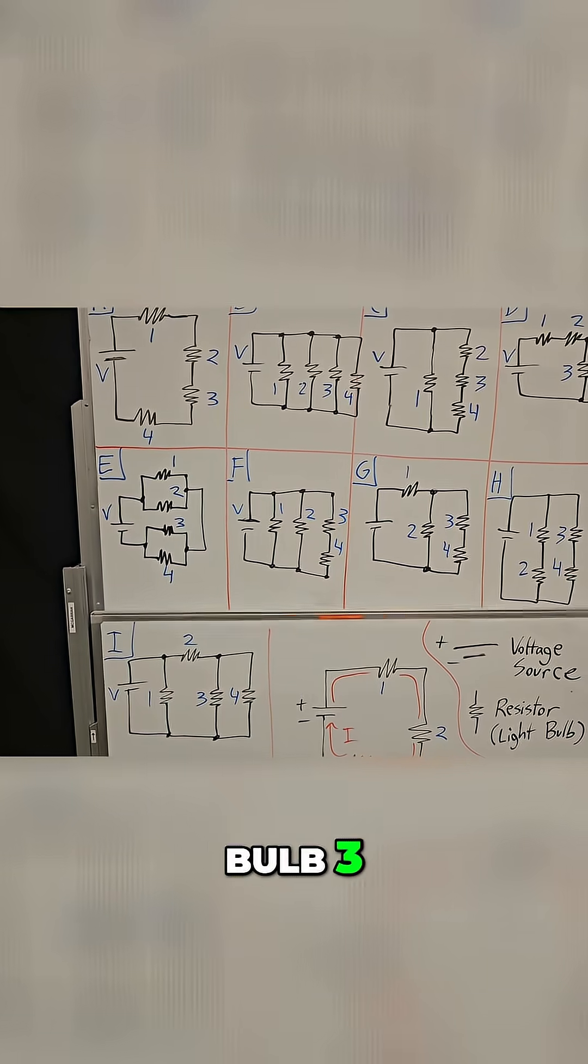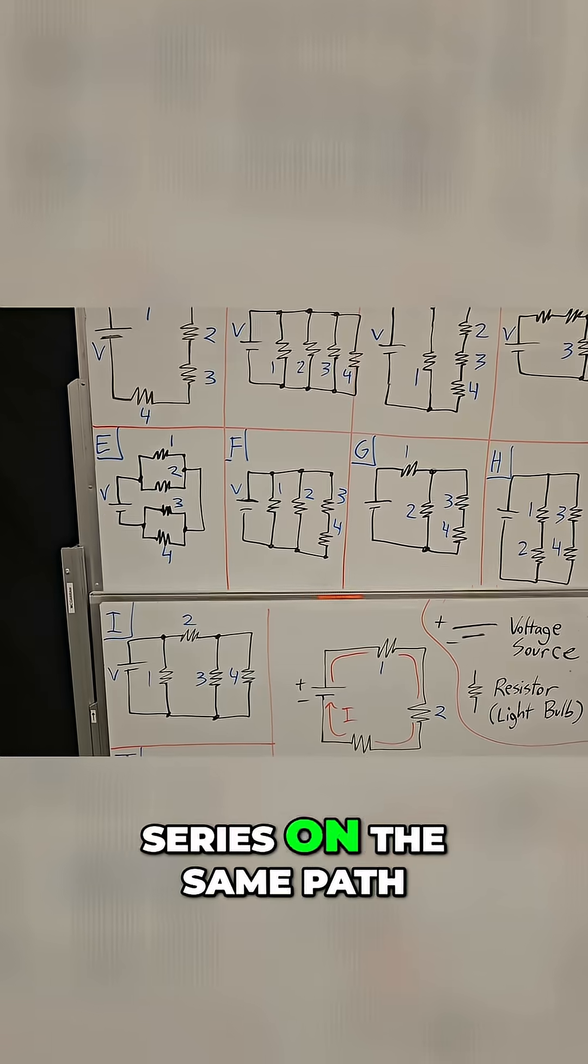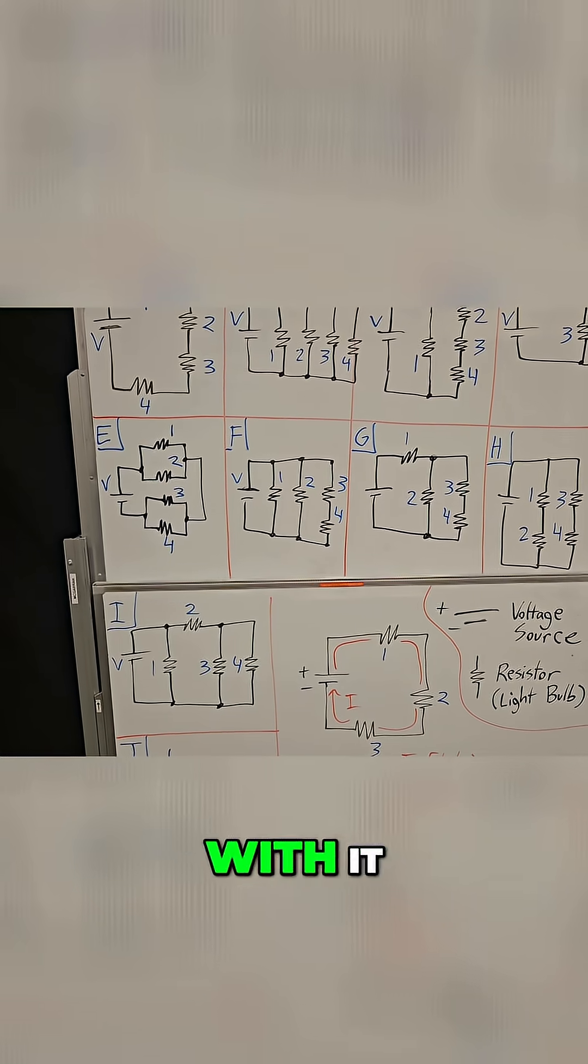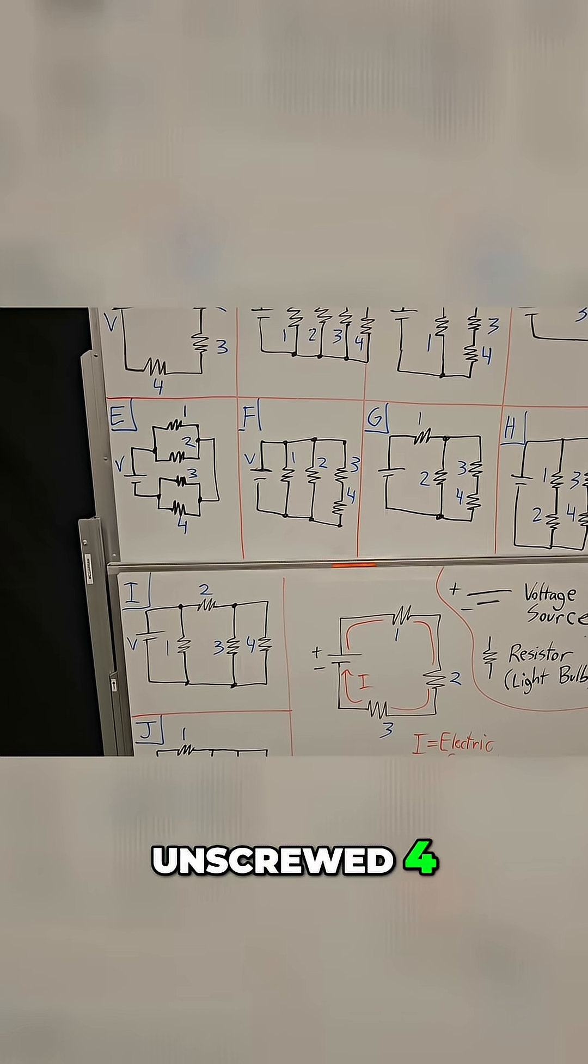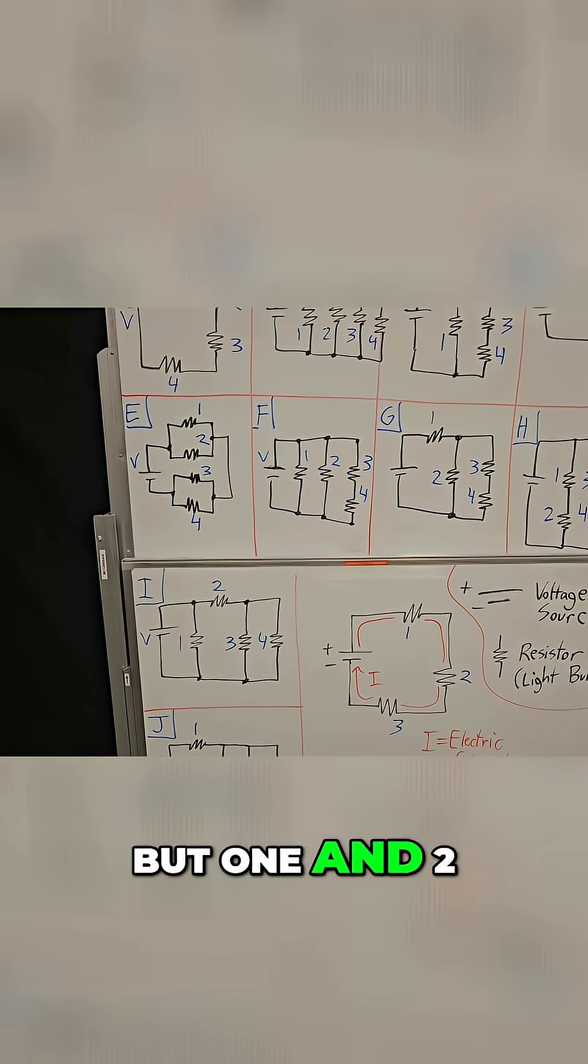But when we unscrewed bulb three, because four is in series on the same path, four also goes out with it, leaving one and two on. And likewise, when we unscrewed four, three goes out with it, but one and two stay on.